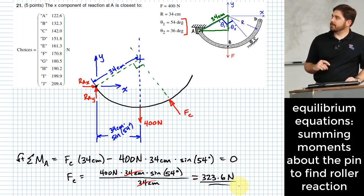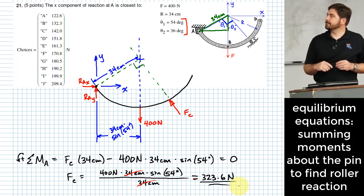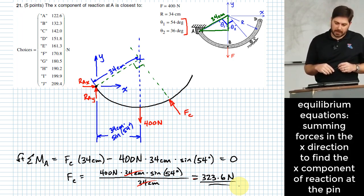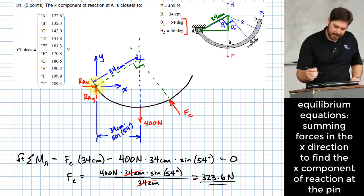Alright. That's not my answer yet. Right. What does it want? Okay. I need to figure out what the X component of reaction is on joint A.